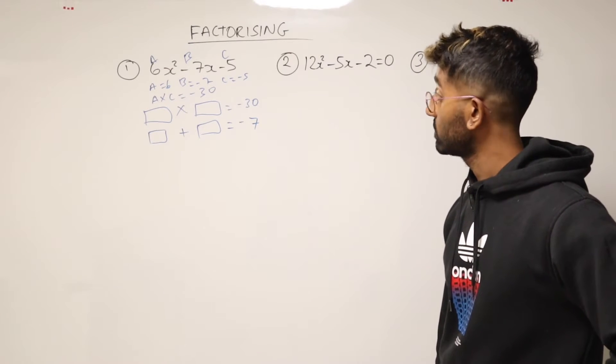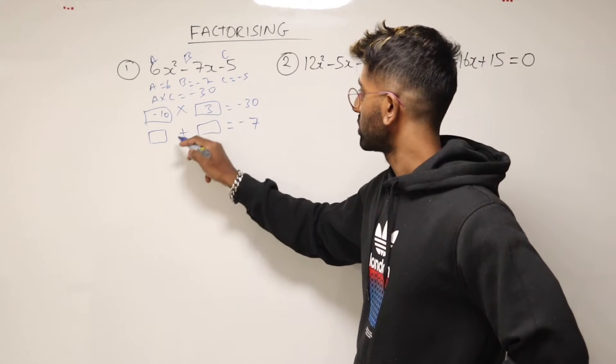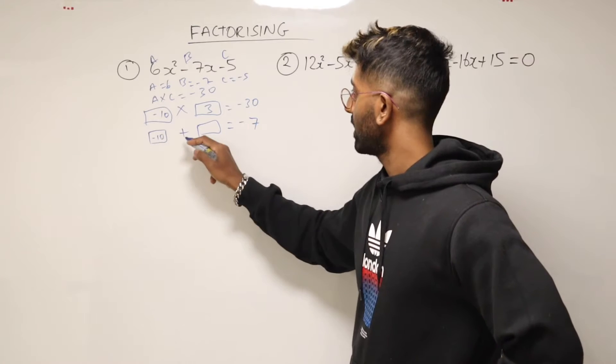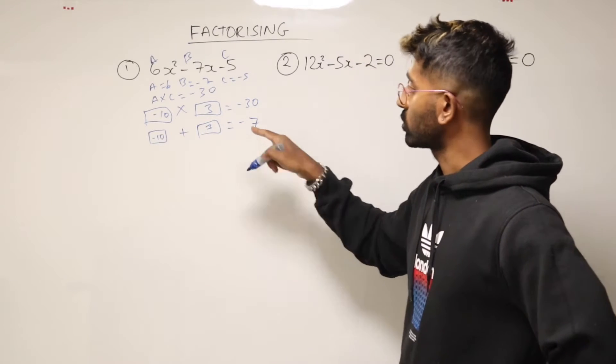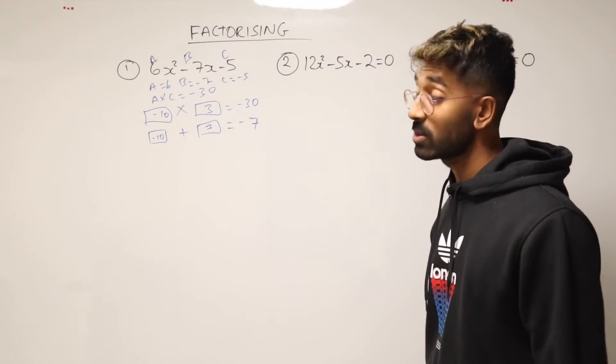Well, 10 times 3 is 30. So I think we'll need to have a minus 10 and a positive 3 because minus 10 plus 3 will also give me minus 7. So there we go. There's the two numbers that we use.